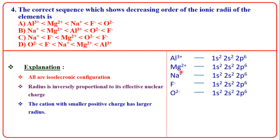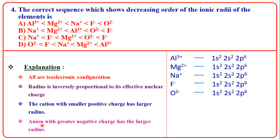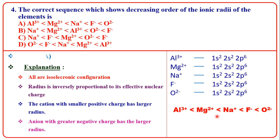For anions, an anion with a greater negative charge has a larger radius. Comparing F⁻ and O²⁻, O²⁻ has the larger radius. Combining both: the decreasing order is O²⁻ > F⁻ > Na⁺ > Mg²⁺ > Al³⁺. The answer is A.